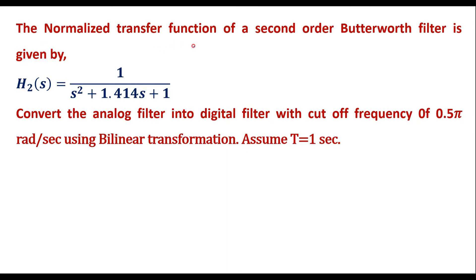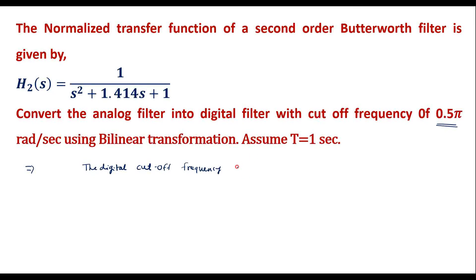Here the normalized transfer function of the second-order Butterworth filter is given as H₂(s). With the help of this we are supposed to design the digital filter whose cutoff frequency must be 0.5π radians per second using bilinear transformation. The digital cutoff frequency given is ωc = 0.5π radians per second.